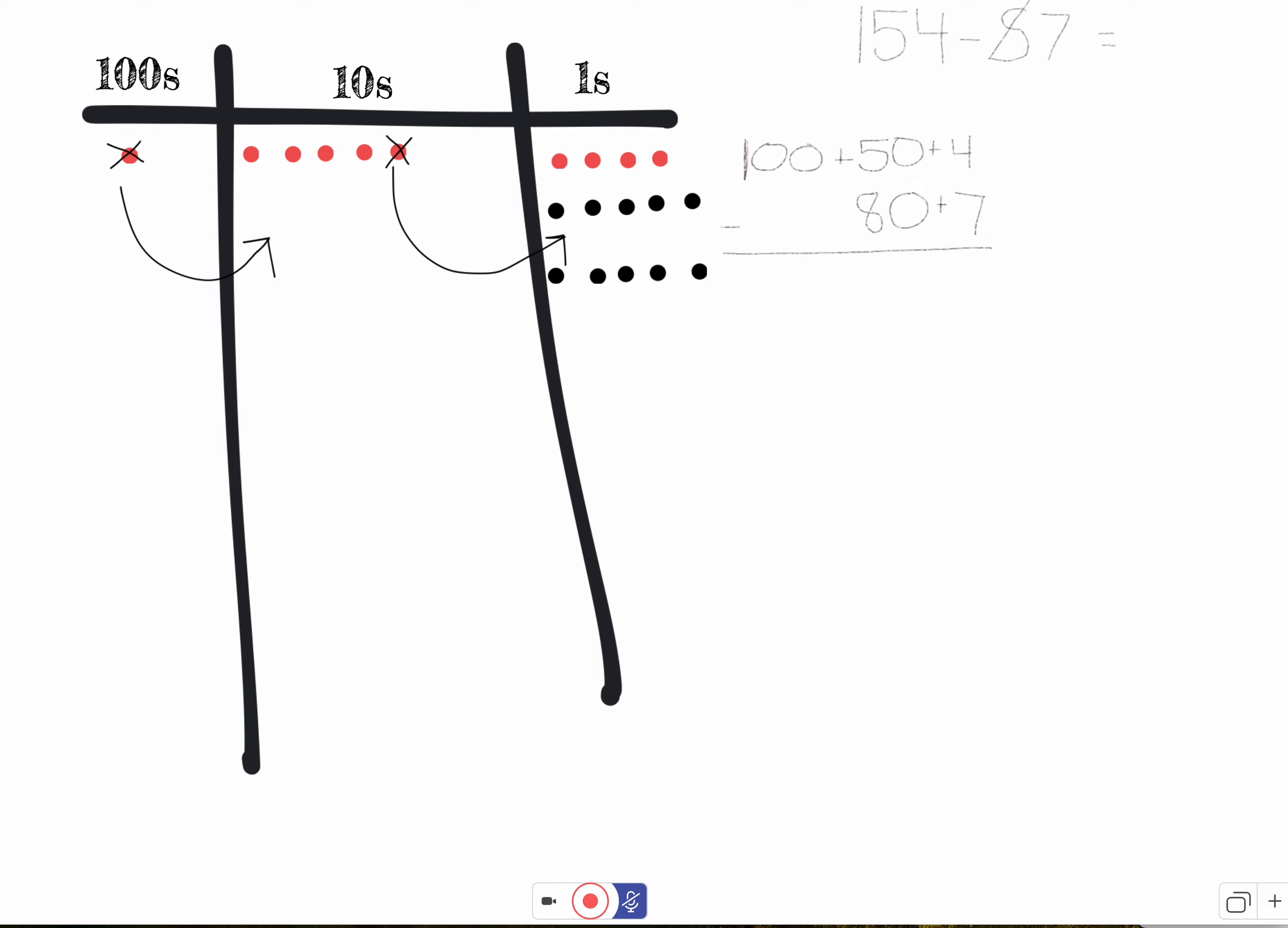So how many tens are in 100? Let's see: 10, 20, 30, 40, 50, 60, 70, 80, 90, 100. Ten tens. Okay, now I can definitely subtract eight tens. Again, we have not even subtracted anything.